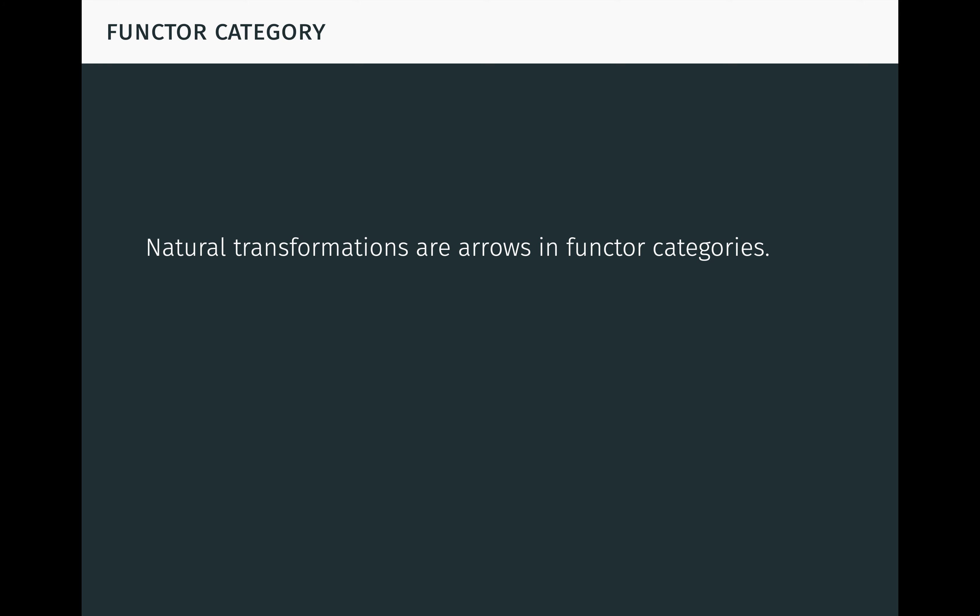Natural transformations really are arrows in functor categories. For categories C and D, the functor category D to the C has, as objects, functors from C to D, and as arrows, natural transformations between those functors.